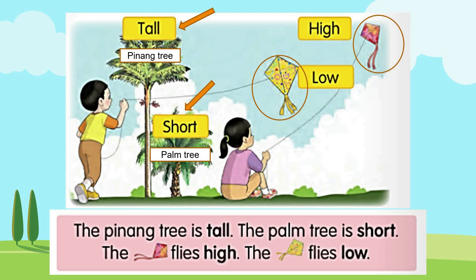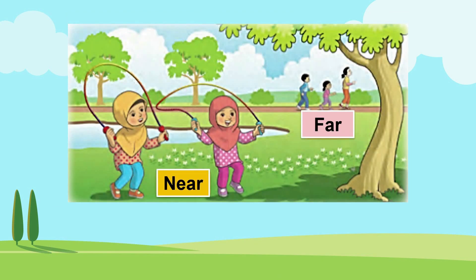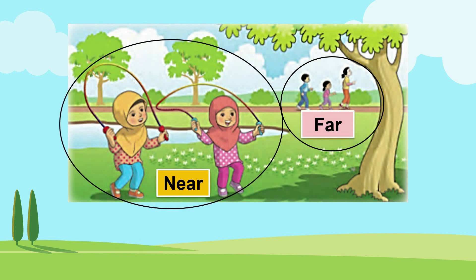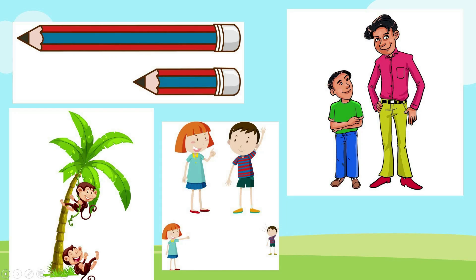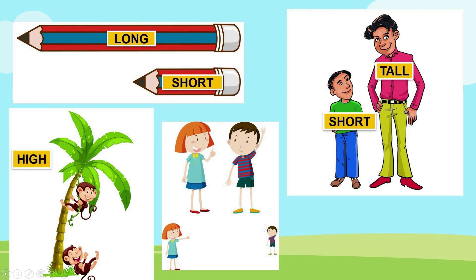Now look at this picture. You can see a family jogging — they are far away. Two girls are skipping ropes and they are very near. Far, near. Let's revise all the words we learned in length — say with me: long, short, tall, short, high, low, near and far.